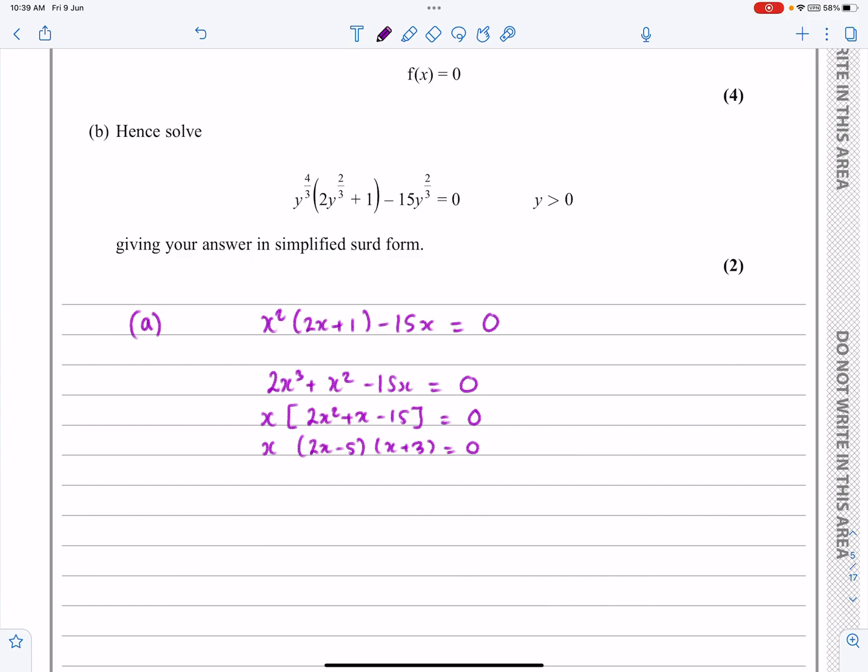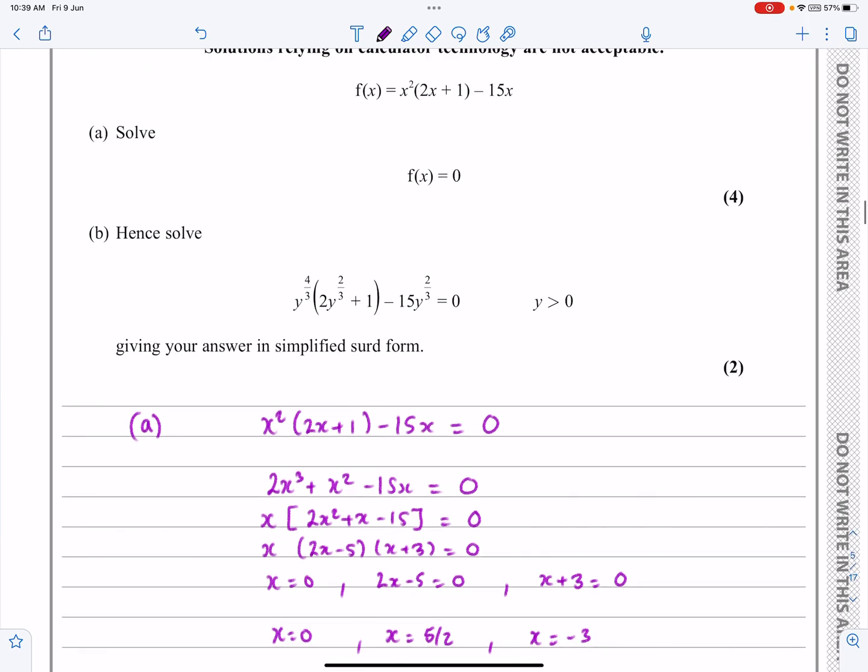And so this is going to give me an answer: x = 0, 2x - 5 = 0, or x + 3 = 0. Which I'll just repeat that. x = 0, this one is going to give me x = 5/2, and this one is going to give me x = -3. Just go back and check the question.